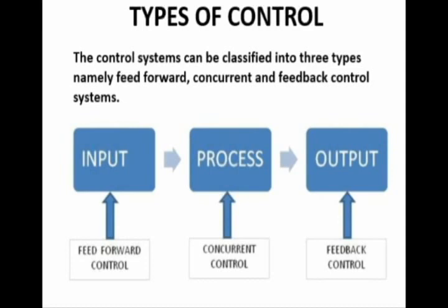As you see the block diagram, we can easily see there are three different stages for each different type of control. In the case of feed forward control, the control mainly happens at the input stage. Concurrent control happens during the process of an event, and feedback control happens at the stage of output. So the type of control is defined by the elements and stages at which we exercise the control. We will talk more about these three different control techniques in further slides.